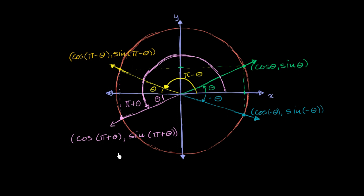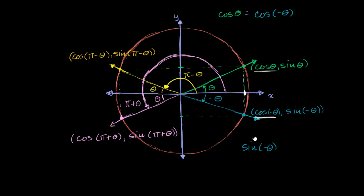How do these relate to each other? On the right-hand side, the x-coordinates for theta and negative theta are exactly the same value, so cosine of theta equals cosine of negative theta. As for their y-values, the sine of theta is a certain distance above the x-axis, while sine of negative theta is the same distance below — so they are negatives of each other. Therefore, sine of negative theta equals negative sine of theta.